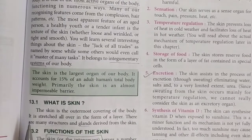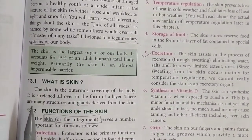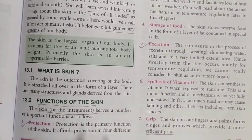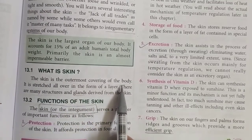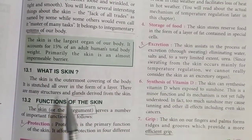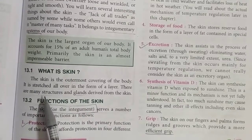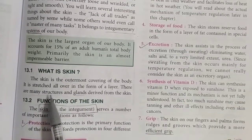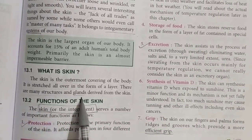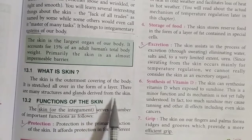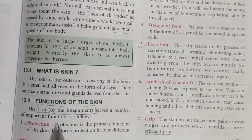The first topic describes the functions of the skin and what skin is. Skin is the outermost covering of the body, and it forms a membrane that covers the entire organism. There are also many structures and glands derived from the skin.